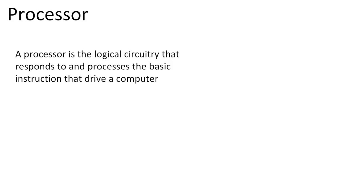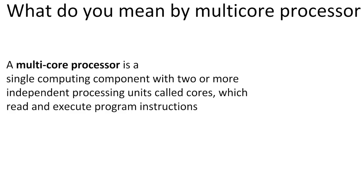A processor works by taking input and providing the appropriate output, much like what our nerve cells do. Now you can easily understand what a multi-core processor is. A multi-core processor is comprised of more than two cores, which read and execute instructions.